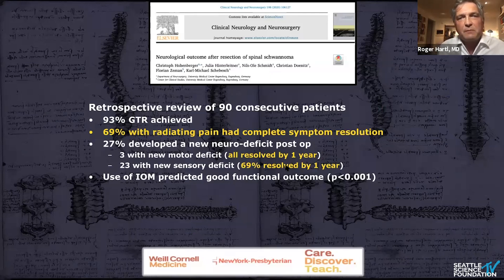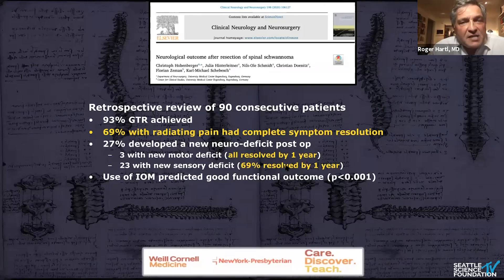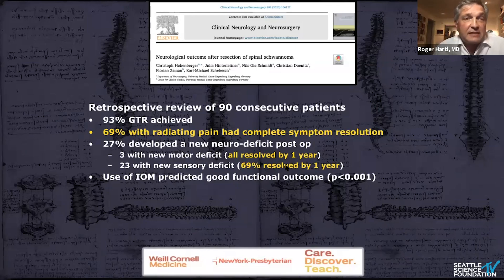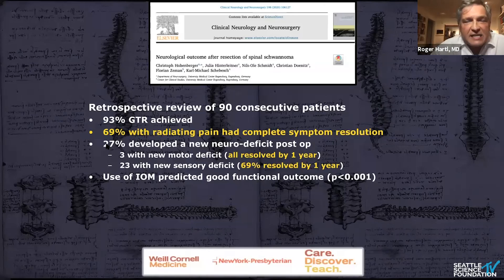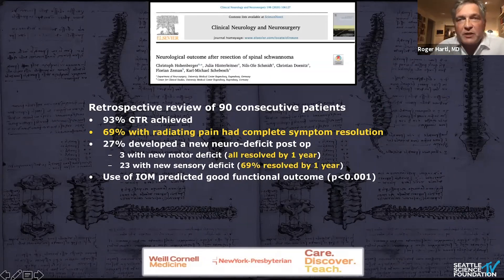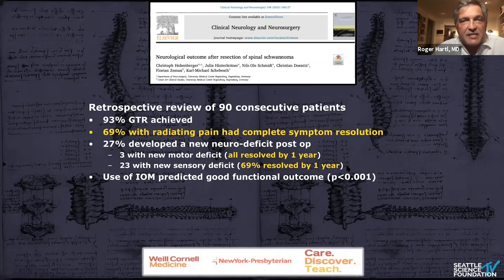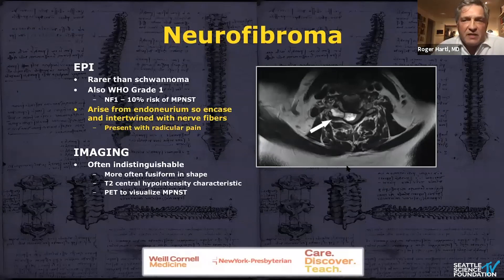There's a paper published recently describing 90 cases of spinal schwannomas. As you can see, for the most part with surgical resection you can get a gross total resection. But 27% in this series actually had postoperative complications — either sensory or motor-related — but most of these resolved within one year. For the most part these patients do really well. You use a microscope, use microsurgical technique, and use intraoperative monitoring for all of these lesions, which has been shown to be beneficial.